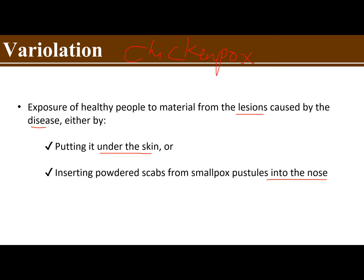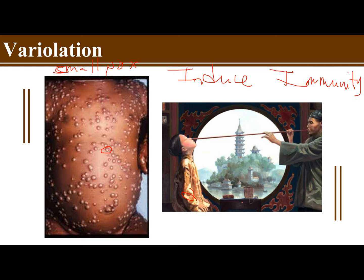Let me repeat: variolation was the process of introducing material caused by disease either under the skin or into the nose. Nowadays, thankfully we have vaccination done by intramuscular injection instead. The two ways variolation was introduced: via inserting it into the skin or inserting it into the nose.